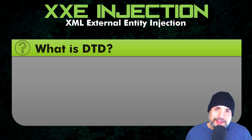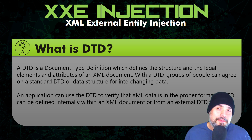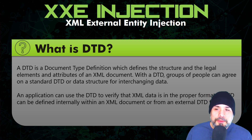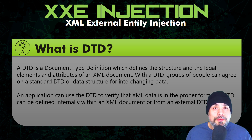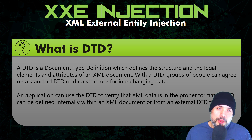Something else we need to talk about is DTD. What exactly is DTD? DTD is the document type definition. It defines the structure and the legal elements and attributes of an XML document. Groups of developers can agree on what the XML file should look like, and this helps facilitate data structure for interchanging data. An application can use the DTD to verify that the XML data is in the proper format. A DTD file can be defined internally within the XML document or externally from a URI or URL.